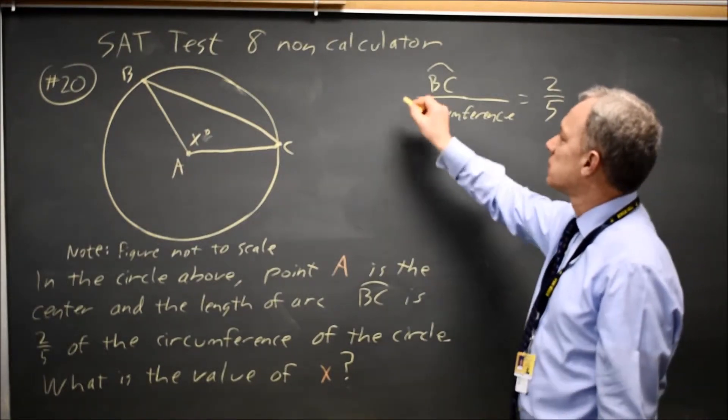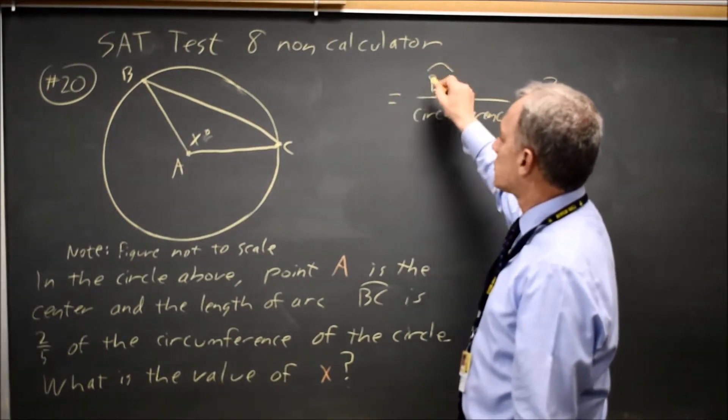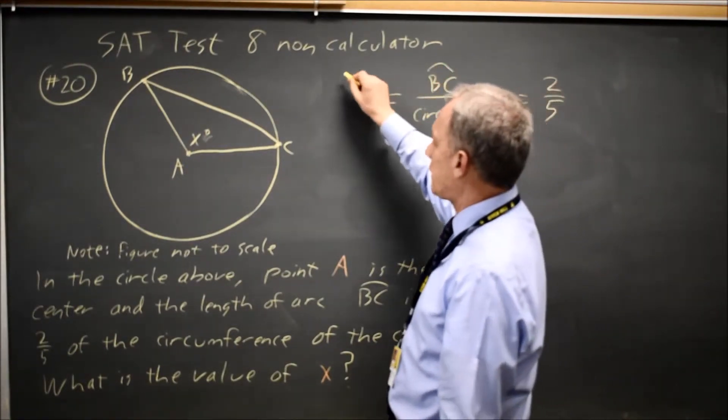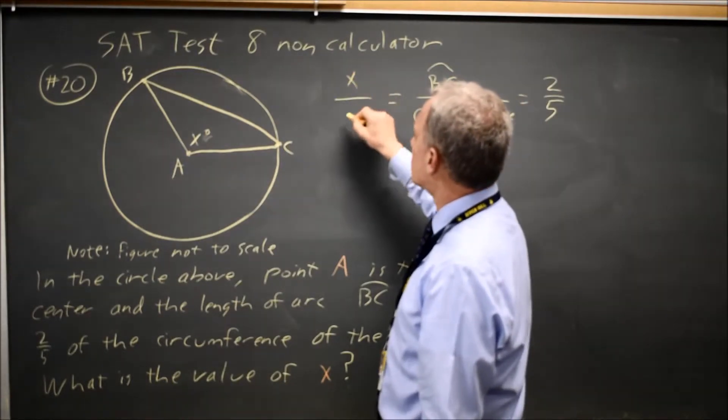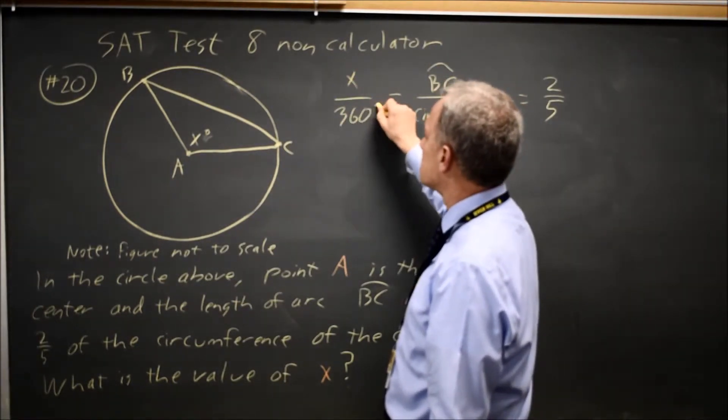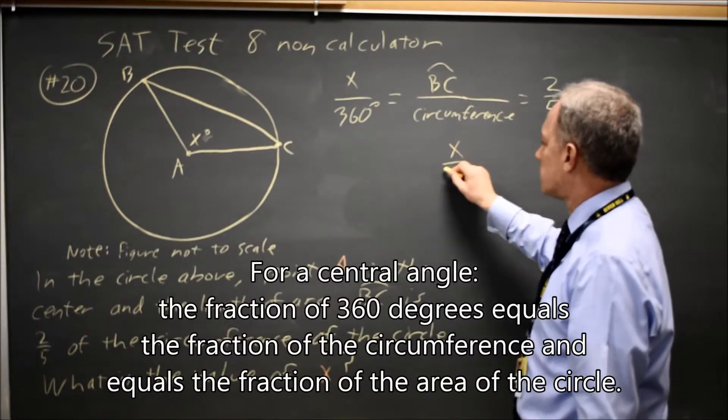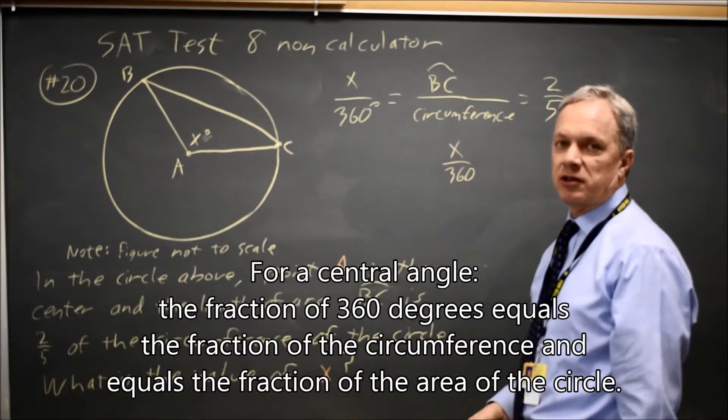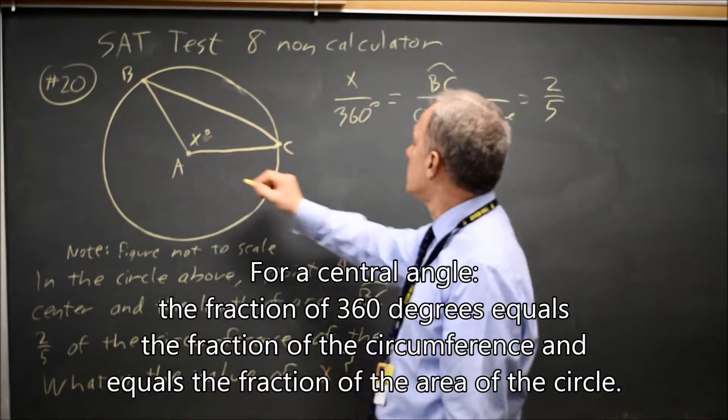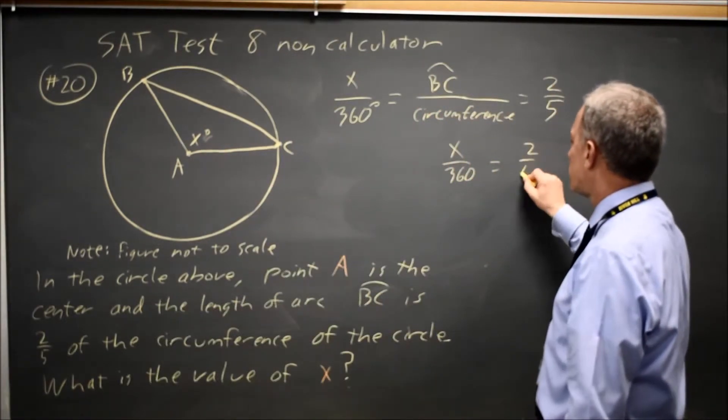But we also know that the arc over the entire circumference is the angle over 360 degrees. This tells us that x over 360, the fraction of the central angle, is equal to 2 over 5.